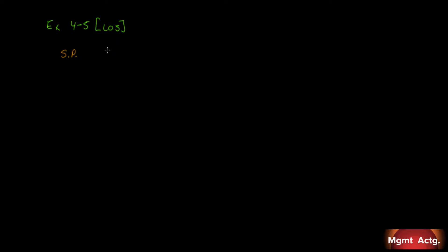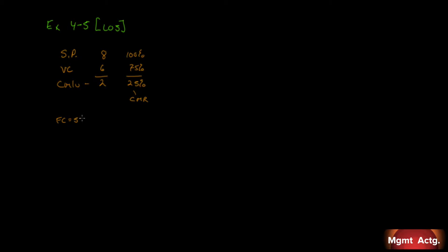Selling price is $8 — I'll call that 100%. Variable cost is $6, which is 75%. Our contribution margin per unit, as a result, will be $2, or 25% — that's the contribution margin ratio (CMR) and the CM per unit. The company's monthly fixed expense is $5,500, so we have a fixed cost of $5,500.